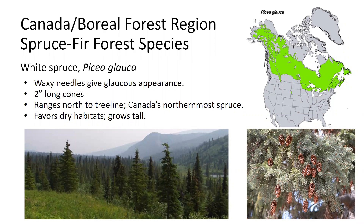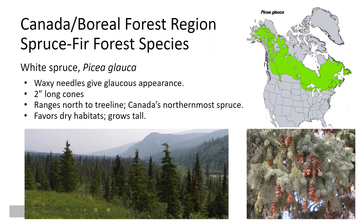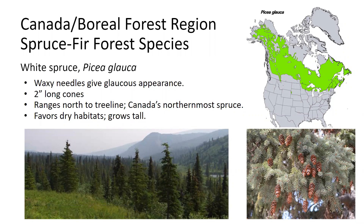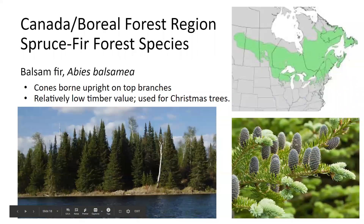Moving farther west, the main species is Picea glauca — white spruce. The needles look a little frosted, and the cones look familiar but a little larger than red spruce. It has this frosted, glaucous, waxy appearance. This species goes all the way up to the climatic tree line and is Canada's northernmost spruce. If you find a spruce in northern Canada, it's probably this one. It tends to favor dry habitats and is a legitimate canopy species that grows quite tall.